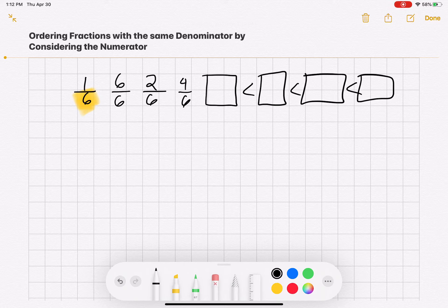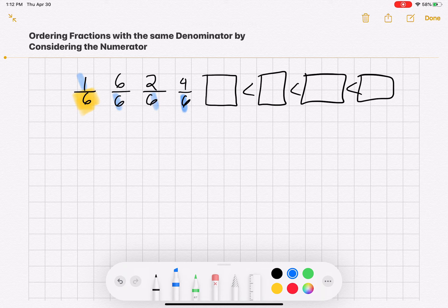So I know I have six parts in all of them. All denominators are the same. So now I can just look at the numerators and order them accordingly, from the smallest to the biggest.